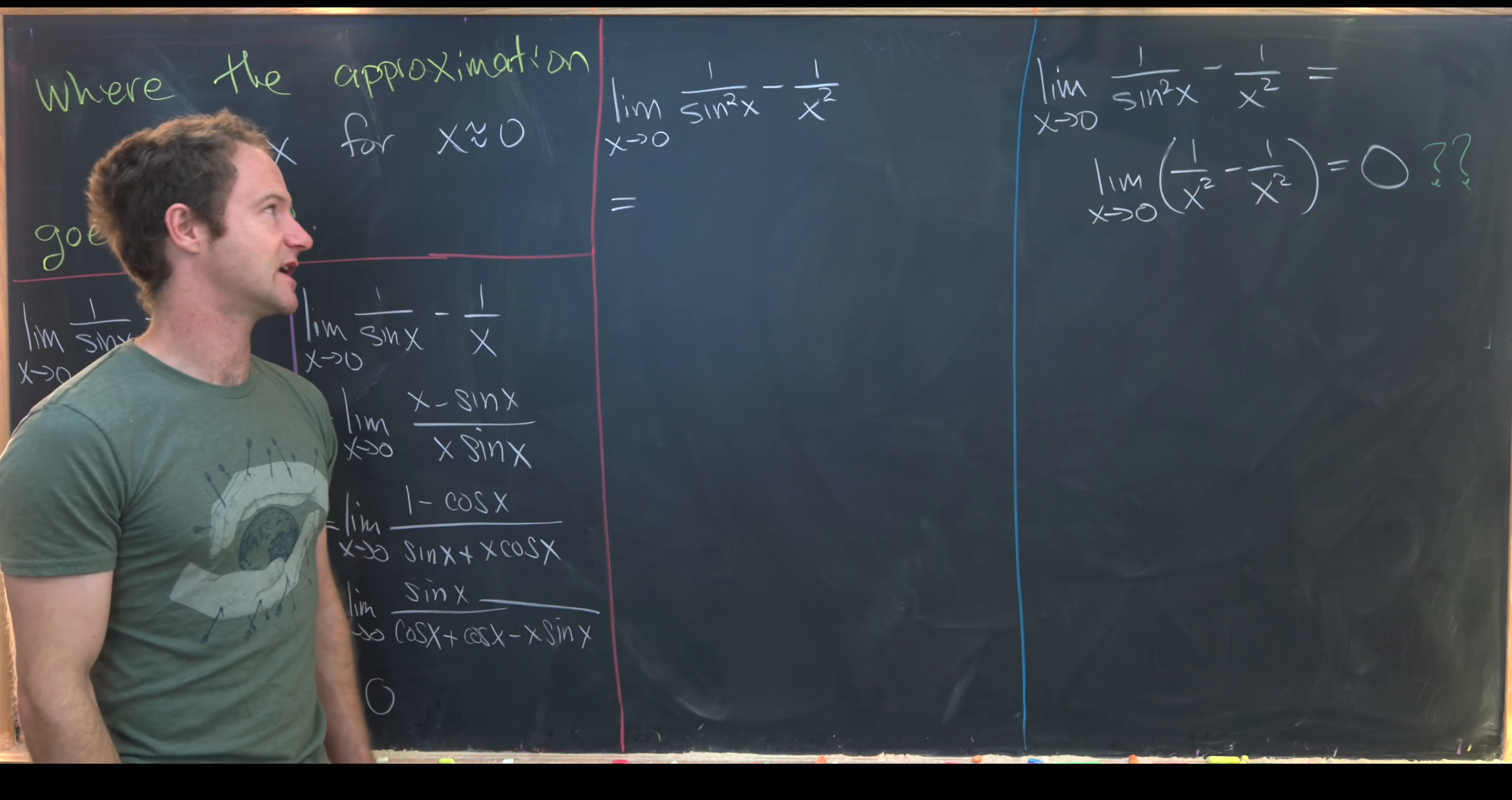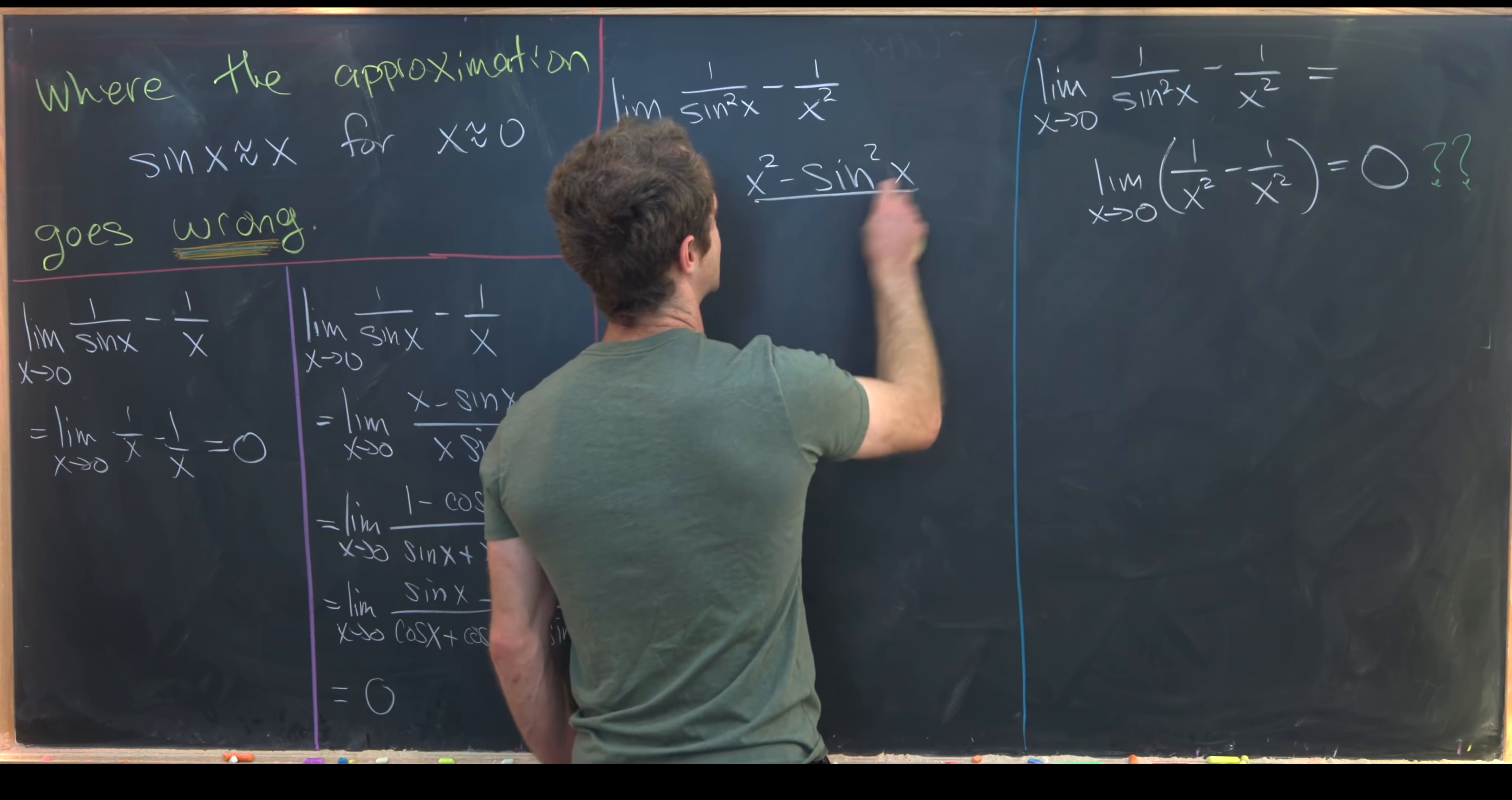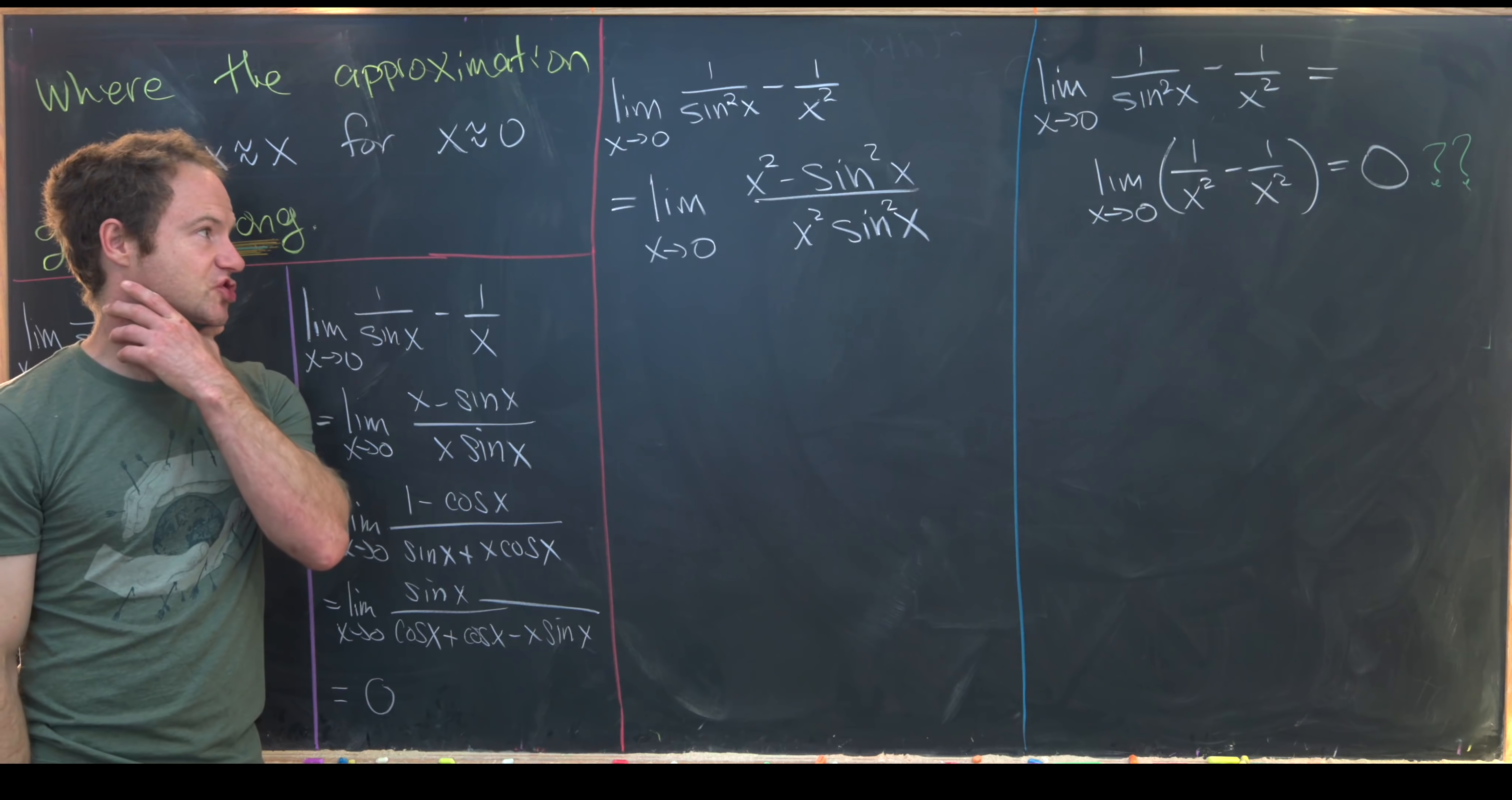So again, I'm going to find a common denominator and combine these fractions. So that gives me this limit as x goes to zero of x squared minus sine squared x over x squared times sine squared x. Okay, nice.